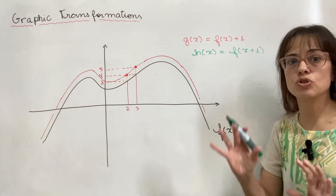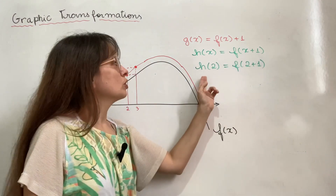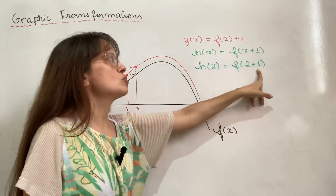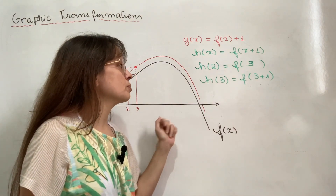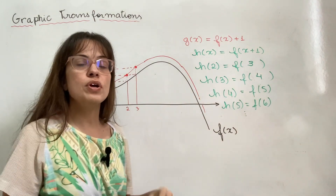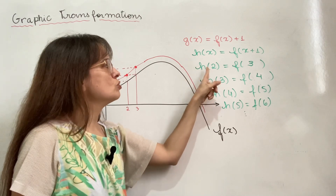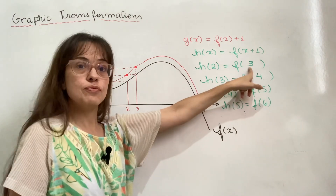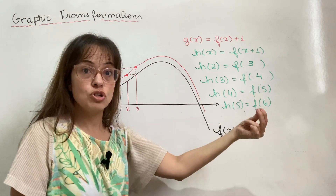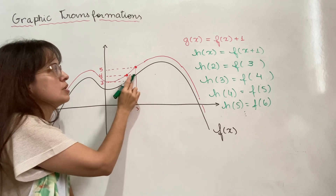Here is what happens with the horizontal transformation. Say you want to figure out h(2). Well, according to this rule, h(x) = f(x+1), so h(2) = f(2+1) = f(3). And the same thing happens for every number: h(3) = f(4), and so on. So when you want to graph this, for each point you have to look a little bit to the right to find the value. To draw h(2), I need the value f(3), which is this point over here. So that is the value of h(2).